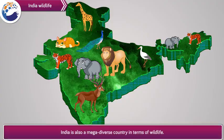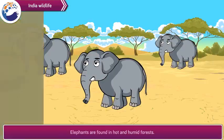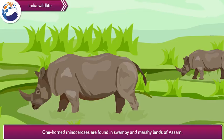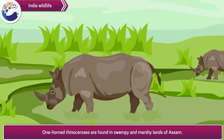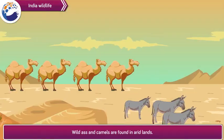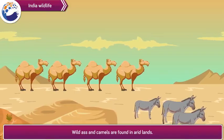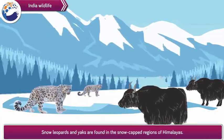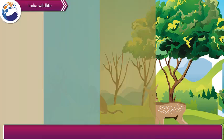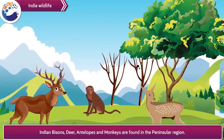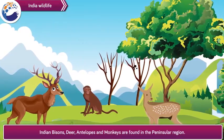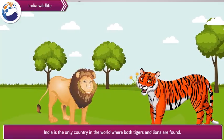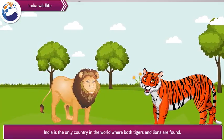Wildlife in India: India is also a mega-diverse country in terms of wildlife. Elephants are found in hot and humid forests. One-horned rhinoceros are found in swampy and marshy lands of Assam. Wild ass and camels are found in arid lands. Snow leopards and yaks are found in the snow-capped regions of the Himalayas. Indian bison, deer, antelopes and monkeys are found in the peninsular region. India is the only country in the world where both tigers and lions are found.